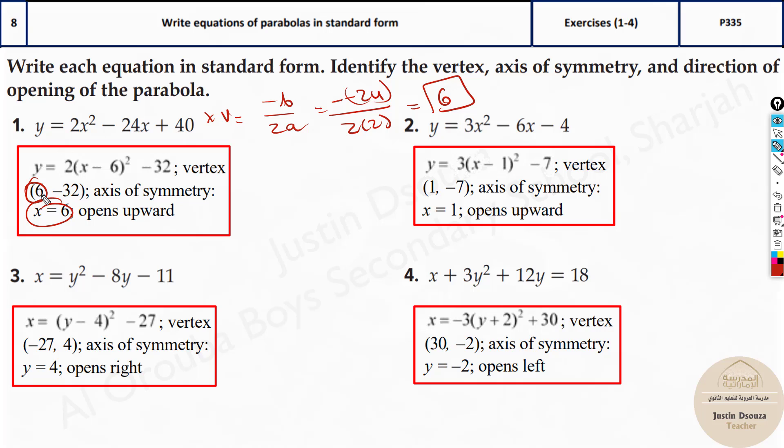Now you can see the axis of symmetry is 6, and the x value of vertex is 6. If you want to find this, just substitute 6 over here and solve it up. It will be 6 minus 6 is 0, it's -32 over here. But this question is about finding standard form. So they have to give you the standard form in the options. And over here it's the same thing, it's just that the orientation is different.